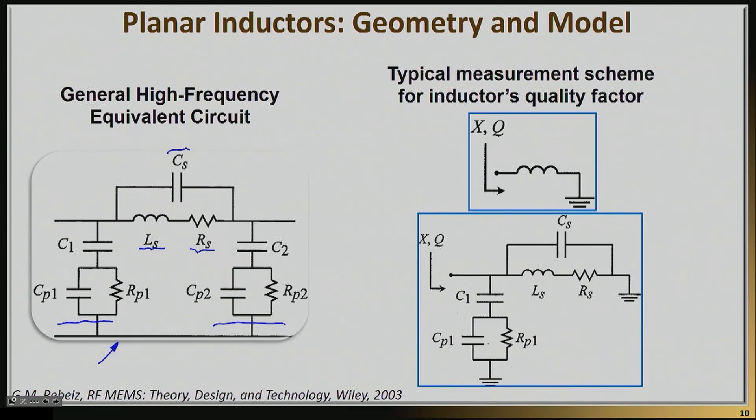Now, how do we calculate all of these things is an interesting question. Nowadays we have very strong numerical electromagnetic tools that can actually do a really good job of estimating those. So typically we get LS and RS mostly from low-frequency simulations. And then we assume that the RS will change as a square root of the frequency due to the skin depth as the frequency is increasing.